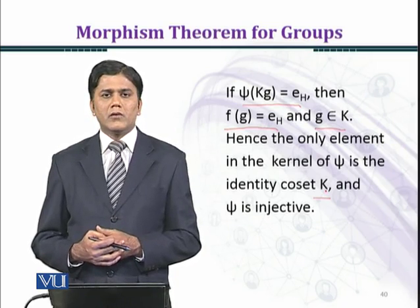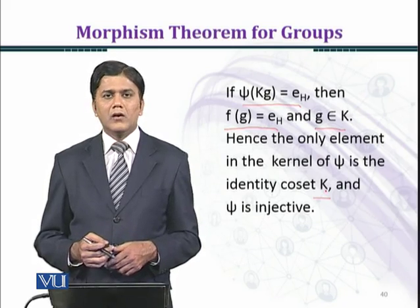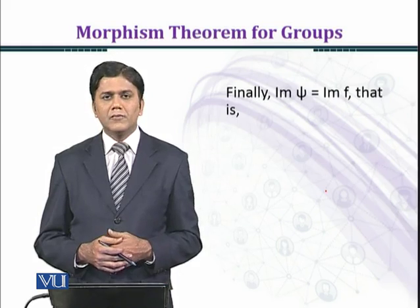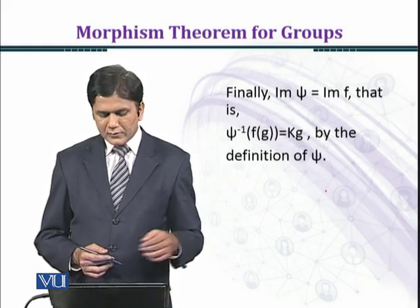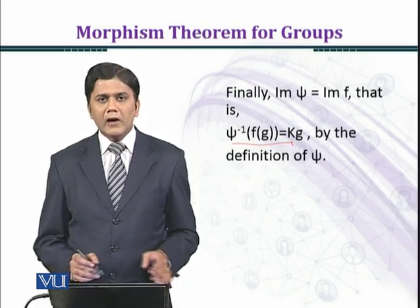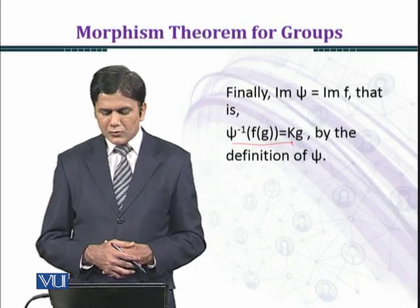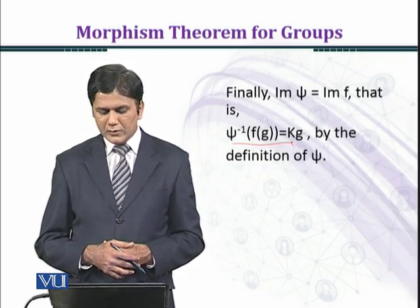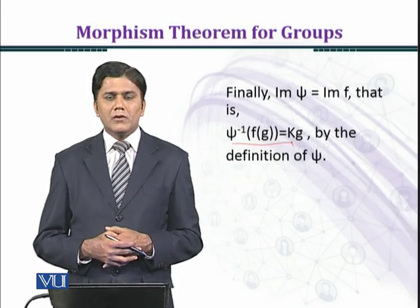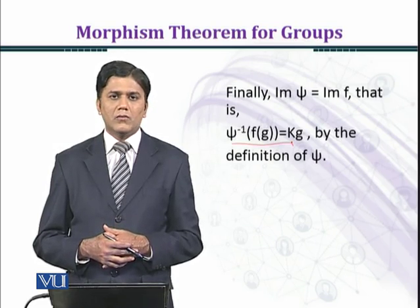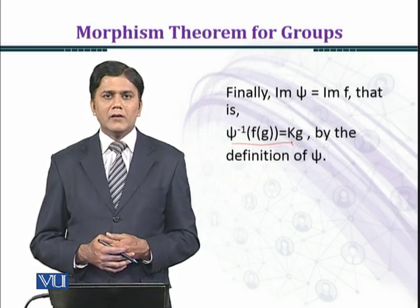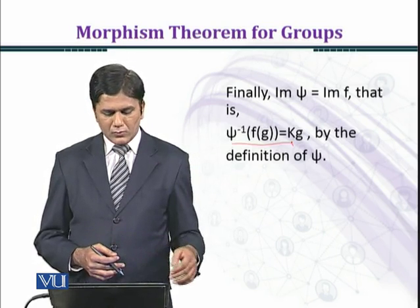So we have proved the one-to-one condition. The image of psi equals the image of F. That is, psi inverse of F(G) equals KG: F(G) is the image of G under F and is in the image set of F, and its pre-image is the coset KG in the group G over K, by the definition of psi. Every element of the image has a pre-image, so psi is onto.